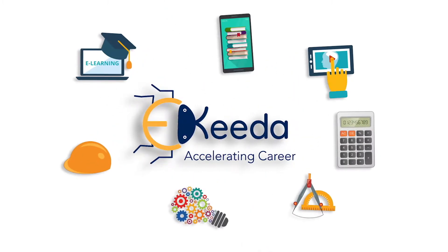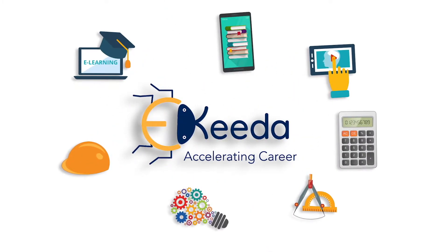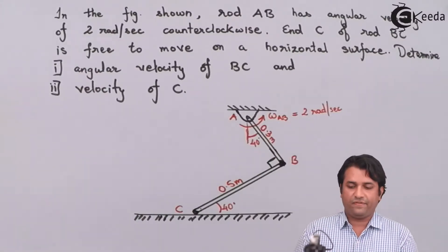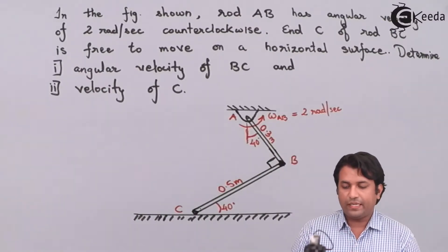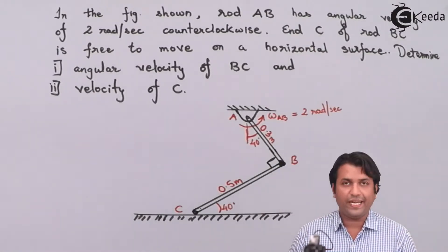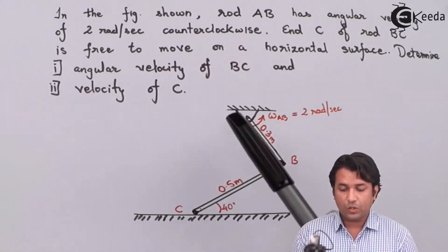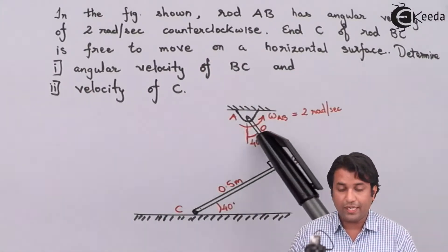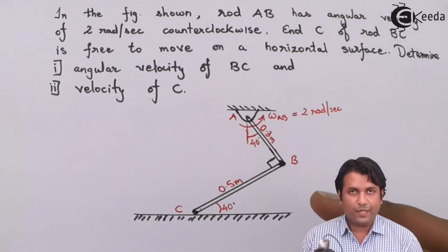Hello students. In this video we will see the next example where we are going to use the concept of ICR and find out the velocities of the links given to us. Rod AB is having an angular velocity of two radians per second and it is going counterclockwise, so it is in this direction.